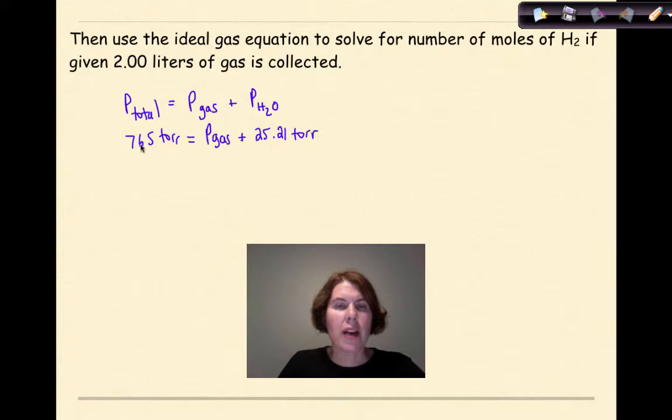So what we're going to do is subtract 25.21 torr from 765 torr, and that will give us the individual or the partial pressure of our gas, which is 739.79 torr. Okay, so we have now the pressure of our gas.